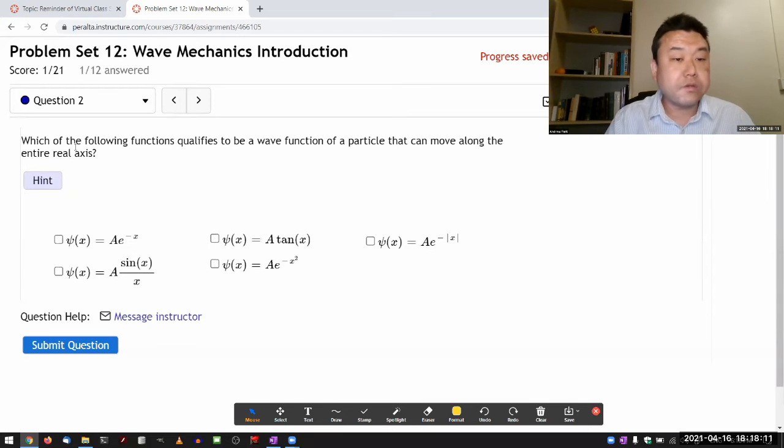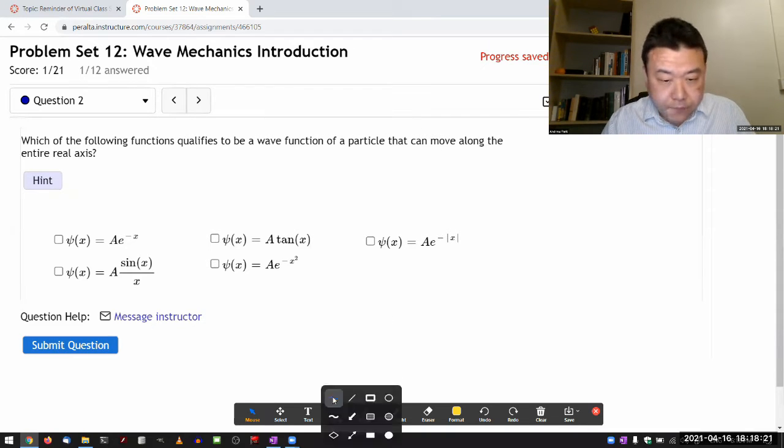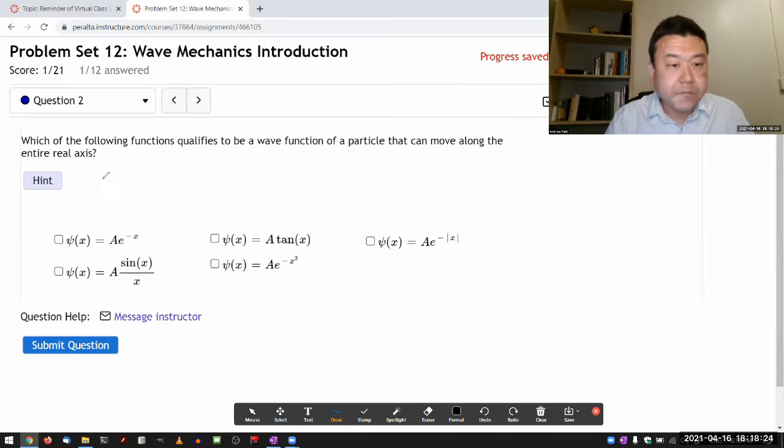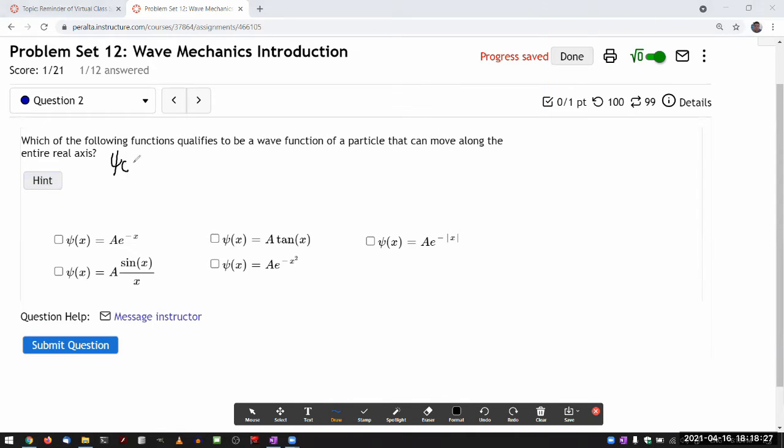So it asks, which of the following functions qualifies to be a wave function of a particle that can move along the entire real axis. And you have to imagine doing this. If you are given some time independent function, they are all functional position alone, then you do have to imagine they're tacking on a particular time dependence. Maybe this is an energy eigenstate for a particular potential. In that case, if it's an energy eigenstate, then it would start out at some position and then it will evolve over time.